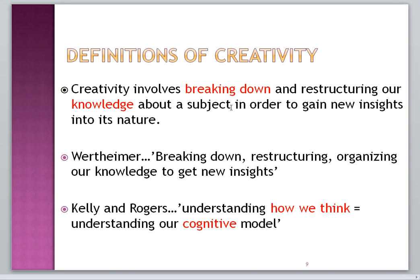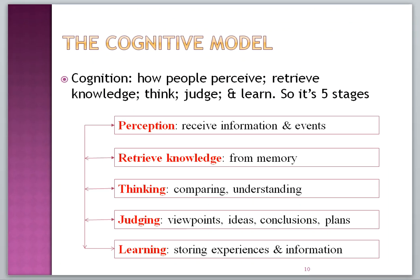The third definition by Kellyanne Rogers focuses on understanding how we think — our cognitive model. This is pretty similar to Wertheimer. It's like assuming that thinking goes through a specific model called the cognitive model. Here is a theory about how our brains and minds work.